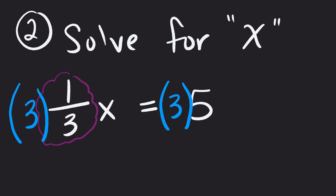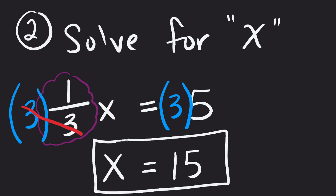So what happens then, on the far left, is that this 3 and this 3 will reduce, because 3 divided by 3 will give us 1, which kind of reduces the problem, just leaves us x. And on the other side, we'll go ahead and multiply these together, we get 3 times 5, which is 15. So we now have our solution, and that's based off the multiplication property of equality.